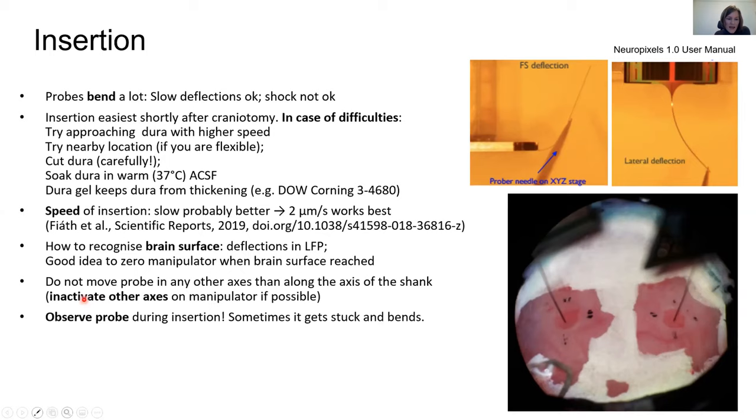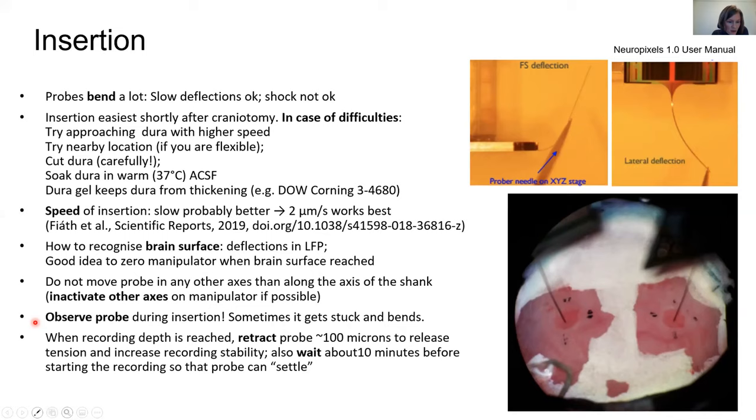Also, if you insert the probe, always keep an eye on the probe, because sometimes it happens that the first microns, it looks all fine. You've inserted the probe through the dura, then you think everything looks fine, you turn away, but it can happen that the probe gets stuck somehow at the dura and then it bends. You need to make sure that this doesn't happen, or you stop the probe from further insertion. Once your recording depth is reached, we found it's a good idea to retract the probe again by about 100 microns, so you release some tension, which will increase your recording stability. We also used to wait about 10 minutes before starting the recording, so the probe can actually settle in and there will be no slow movements of the brain relative to the probe. We used to only then fill the recording chamber with saline or ACSF.